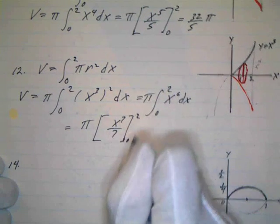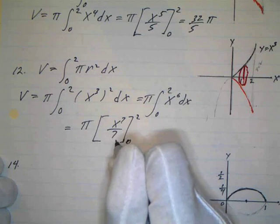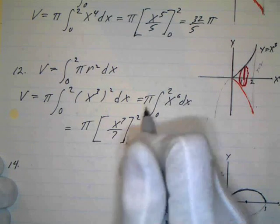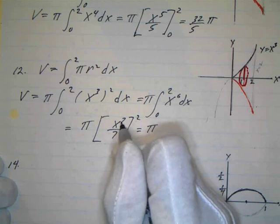From 0 to 2, and again the 0 just drops out, 0 to any power of 0 over 7 is 0. So I just have this, so it's going to equal pi times. And what's x to the 7th? Well, I'm sorry, 2 to the 7th.